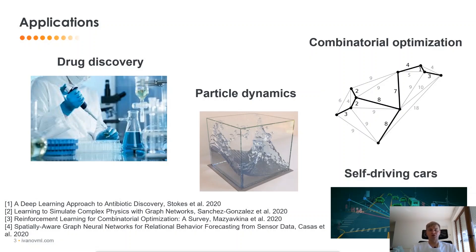You can apply GNN to predict the dynamics of particles, for example, the particles of water. You can also apply GNN together with state-of-the-art solvers that solve combinatorial optimization problems, such as TSP or MaxCut. And finally, we can use GNN to predict the behavior or the dynamics of pedestrians and other cars for autonomous driving.